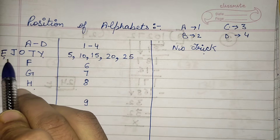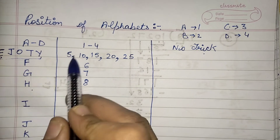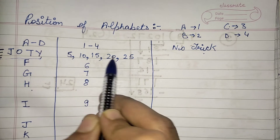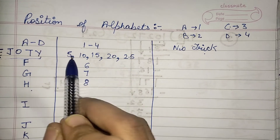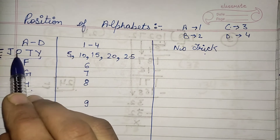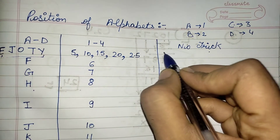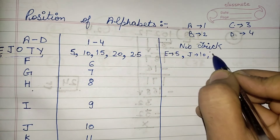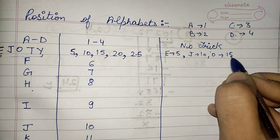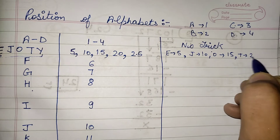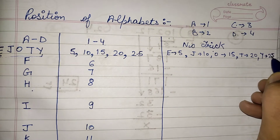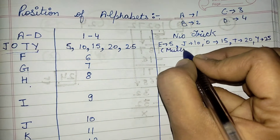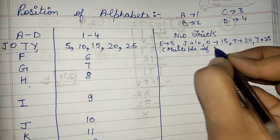Let's remember the word EJOTY. EJOTY represents the alphabets at multiples of 5. E is at 5th position, J is at 10th position, O is at 15th position, T is at 20th position, and Y is at 25th position. So wherever they are present — EJOTY — they are present at the multiples of five.